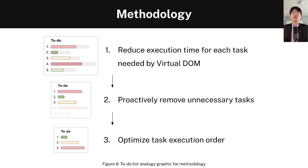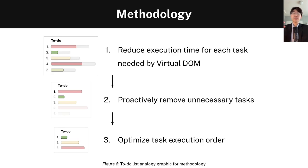In order to ensure fast runtime performance, I followed a three-step methodology. First, reduce execution time — since we're already leveraging the compiler, we can reduce the number of computations needed, thereby reducing execution time. Second, proactively remove unnecessary tasks — Million introspects its own tasks and removes any that are unnecessary. Third, optimize task execution order — tasks important for website performance are executed first, while less important tasks are deferred for later.